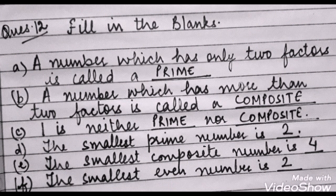D is: the smallest prime number is obviously 2. E part: the smallest composite number is 4. Composite number means having more than 2 factors. And the last part is: the smallest even number is 2.